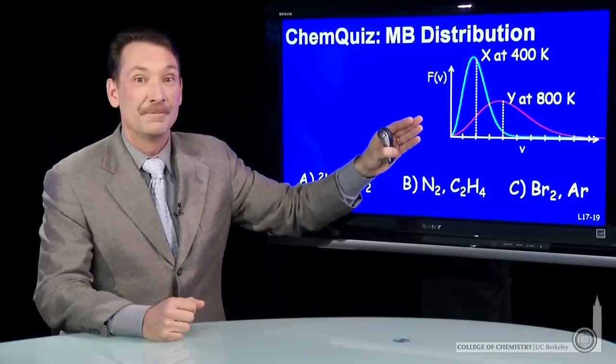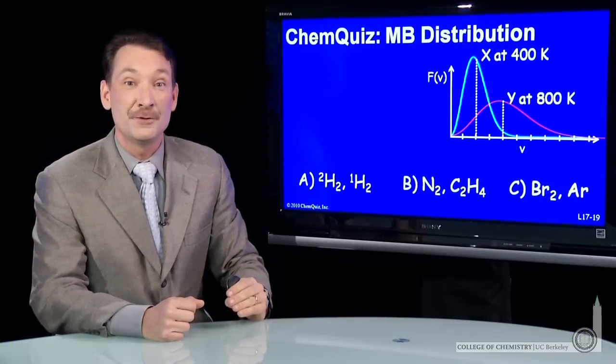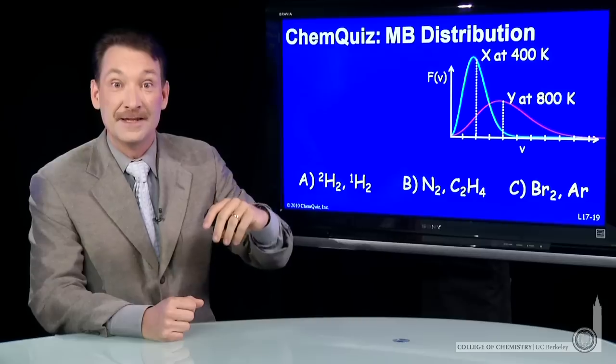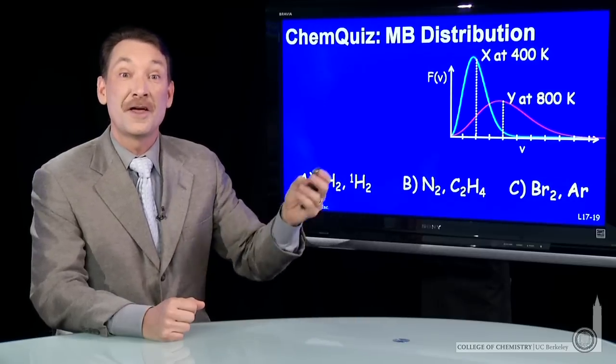The temperature is doubling, but that wouldn't give us a factor of two. That would give us a factor of square root two in the RMS velocity. So we need another factor of two.